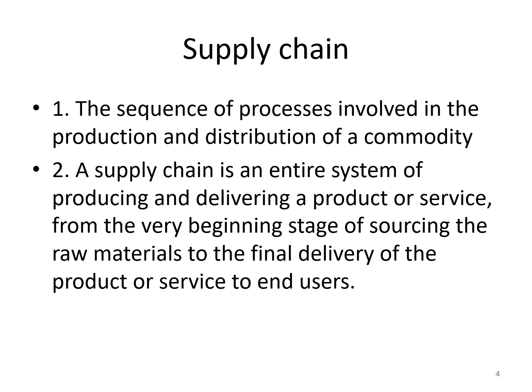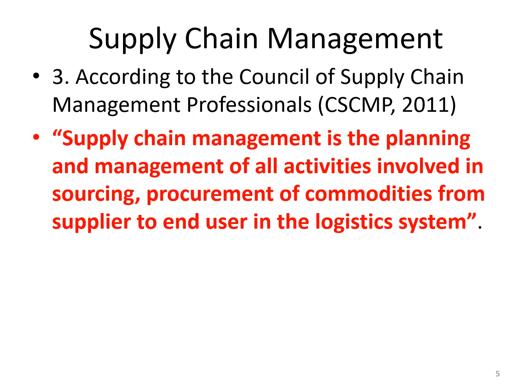Supply chain can also be defined as the entire system of producing and delivering a product or service, from where you get raw materials and start producing. For example, how do you make a packet of sweets? The raw materials go into the production process to make the actual sweets, then packaging, and then moving it to the end user. Supply chain management is the planning and management of all activities involved in sourcing and procurement of a commodity from supplier to end user.